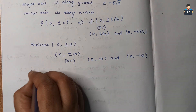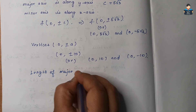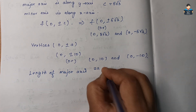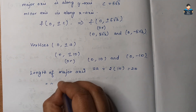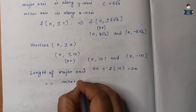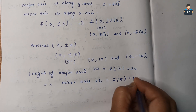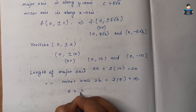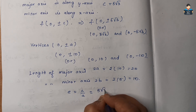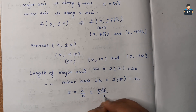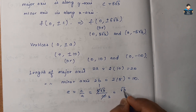Length of major axis = 2a = 2 × 10 = 20. Length of minor axis = 2b = 2 × 5 = 10. Eccentricity e = c/a = 5√3 / 10 = √3/2.